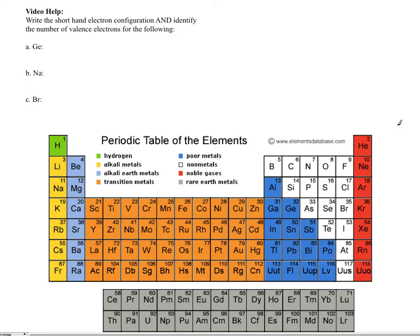So the first thing we're going to do is write the shorthand for Ge. So what you have to do is find your element. So here it is right here. You have to move up one row and all the way across to your noble gas. And so my noble gas in this example is going to be Ar. So I'm going to put Ar in brackets.